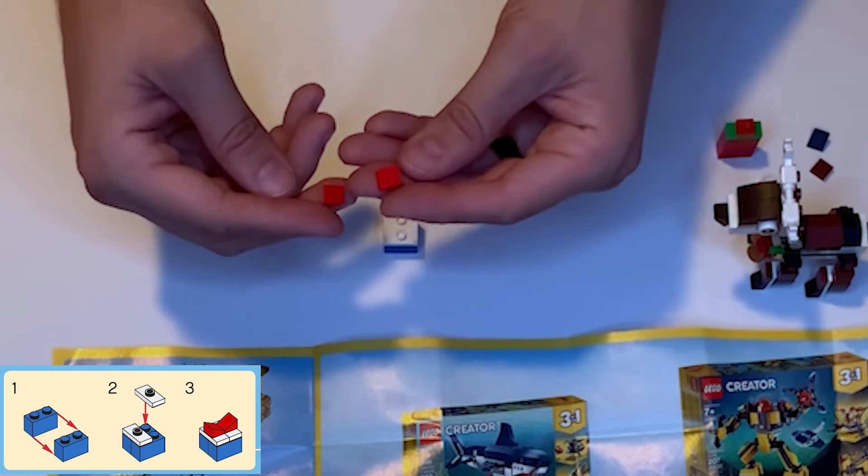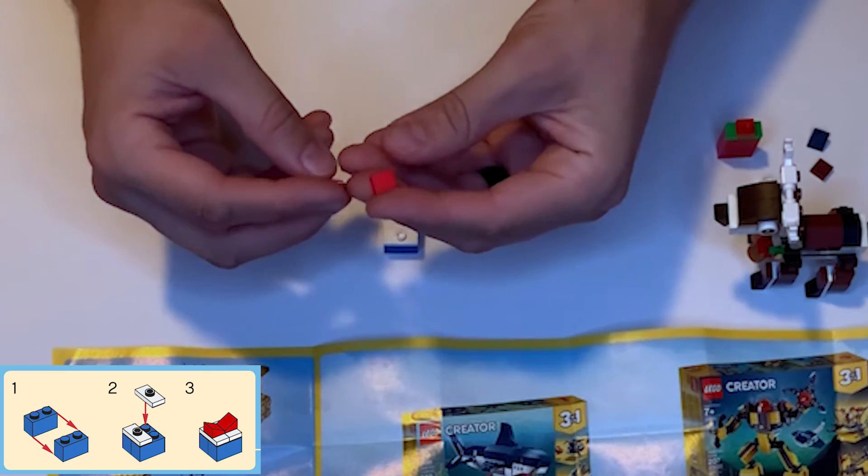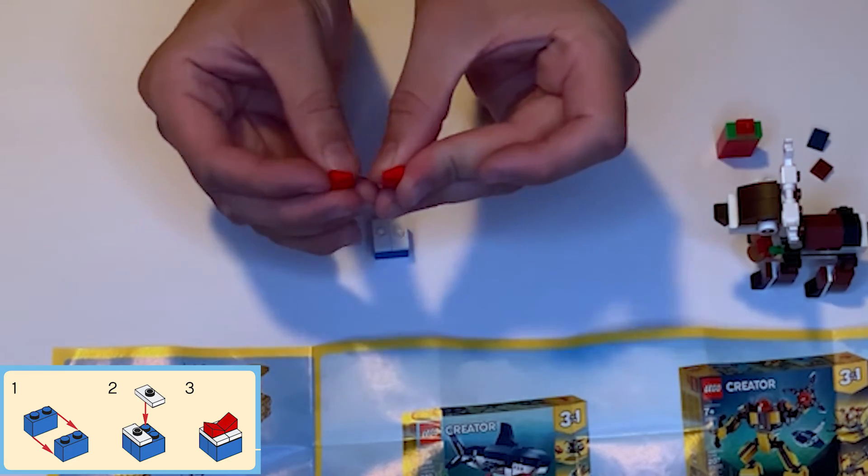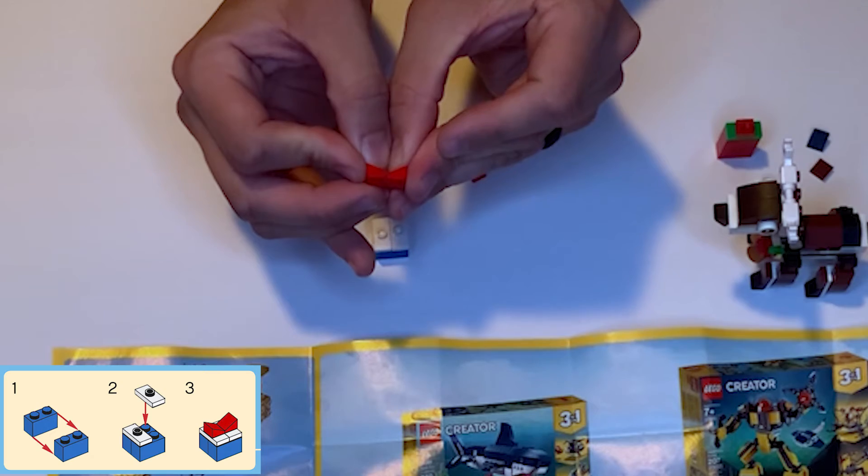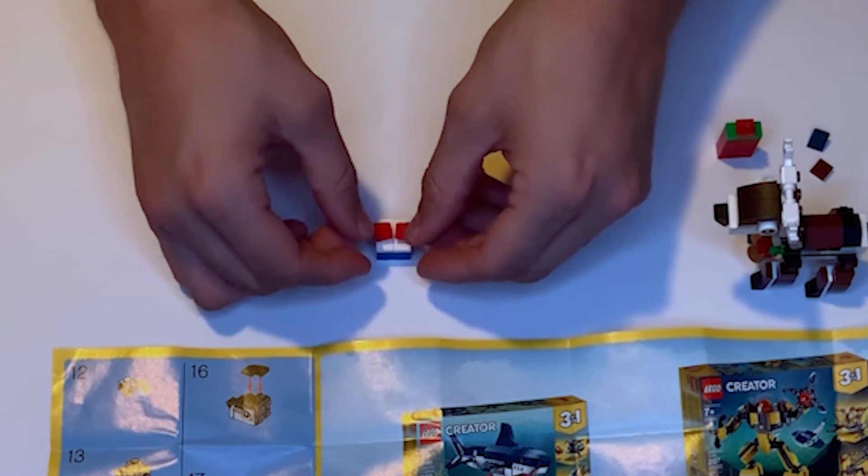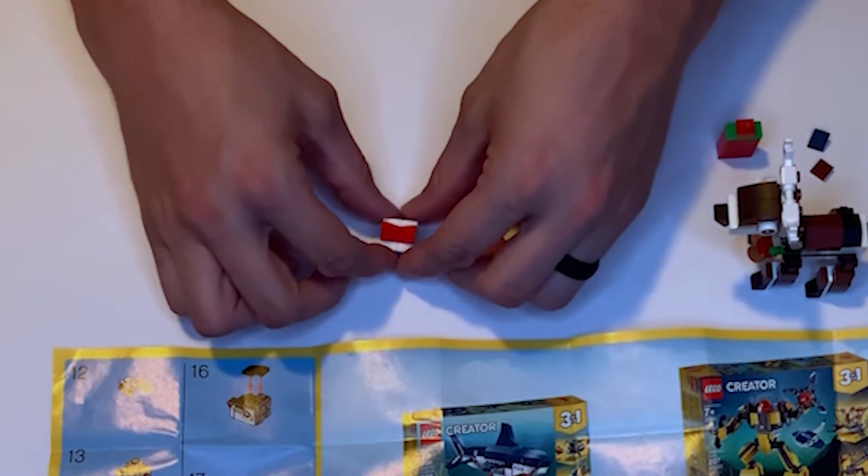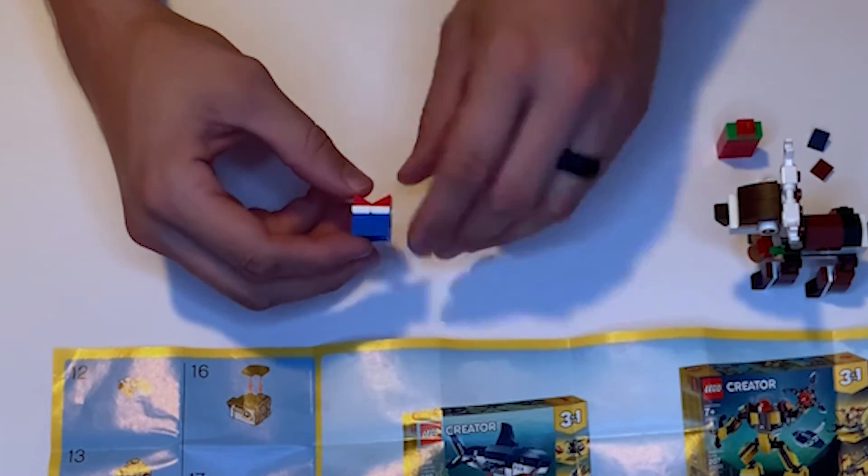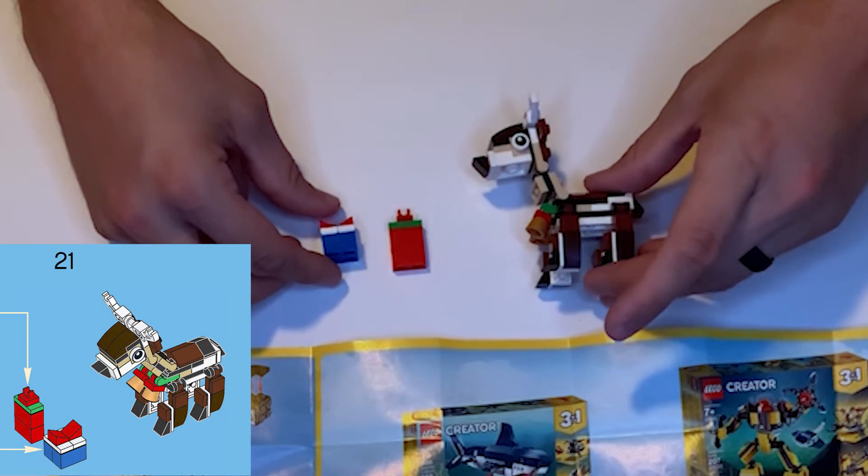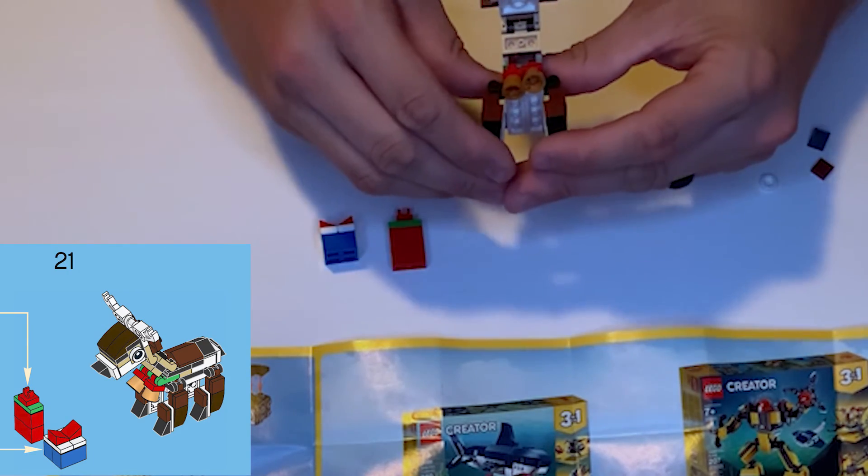Now last step, take two of these red slope tiles and we're going to put them so that they form like a valley, a V-shape, and we're going to put them on top of these white single studs. Nice little bow and we have our reindeer with two presents. And that's it.